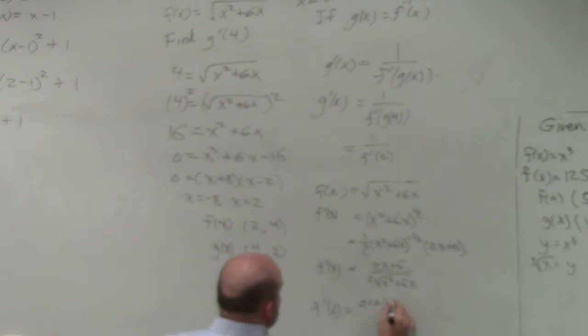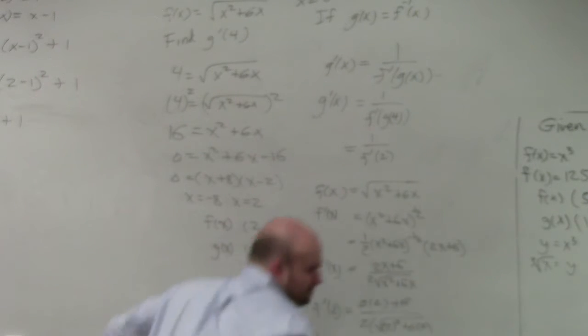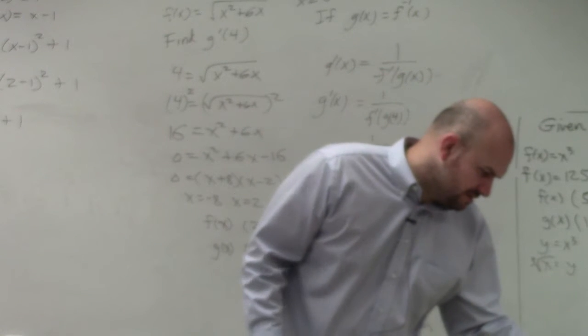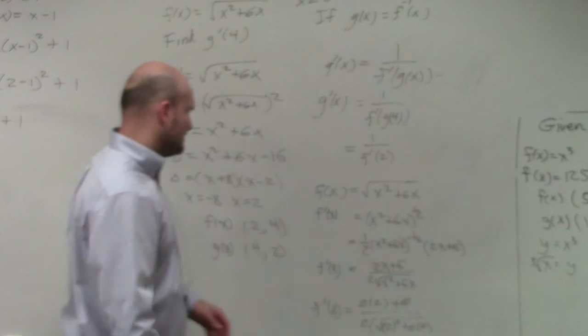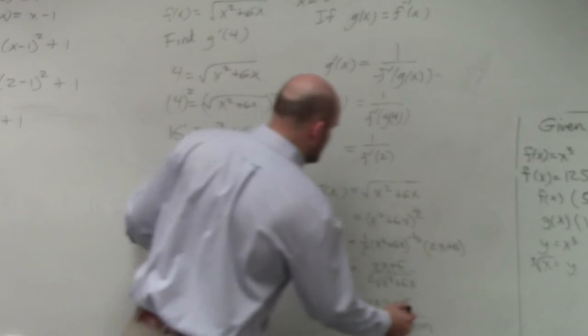2 times 2 plus 6 divided by 2 times square root of 2 squared plus 6 times 2. And I didn't finish this up.